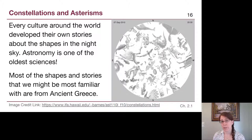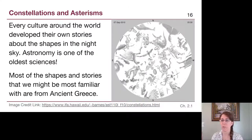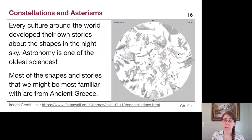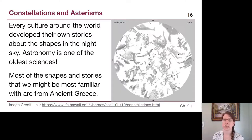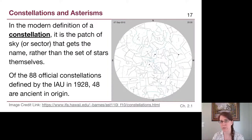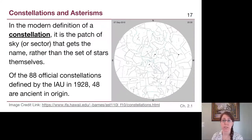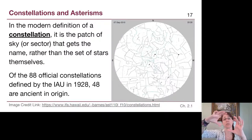When we look up in the nighttime sky we don't see beautiful pictures — we see a bunch of dots. A lot of times the way we learn these different constellations is by making connect-the-dot patterns to see different shapes. But it is really important that we understand that in the modern definition, a constellation is not even just the connect-the-dot pattern — it is the entire sector of the sky that gets the name of that constellation.